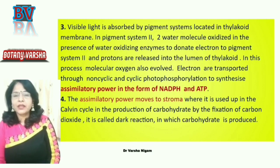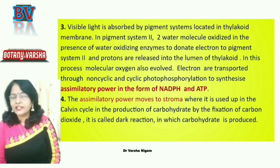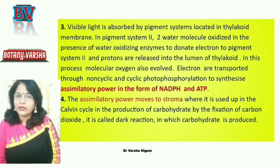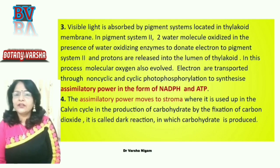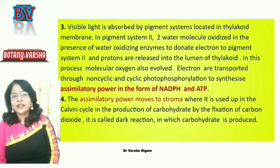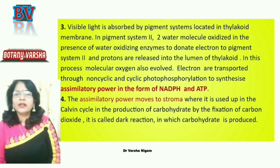Non-cyclic and cyclic photophosphorylation then take place. In this process, assimilatory power is produced. This assimilatory power consists of NADPH — the reduced form of nicotinamide adenine dinucleotide phosphate — and ATP, adenosine triphosphate, also called the energy currency of the cell. Energy is stored in this process, and molecular oxygen is released.